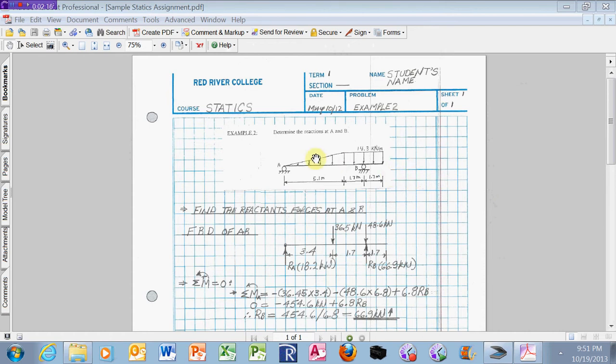The next thing I'm going to do is read the problem and create a problem statement. A problem statement is what I am going to solve for. That problem statement happens to be right here. I'm telling the person reading this assignment that I am going to find the reactant forces at A and B.